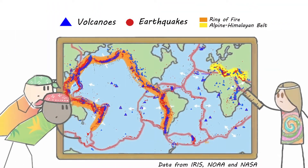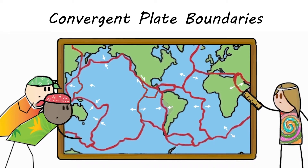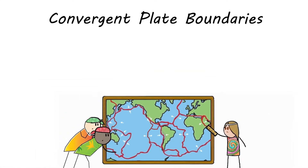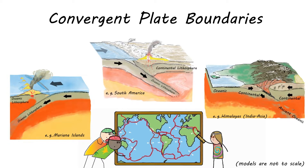In this episode, we're going to focus on convergent plate boundaries. A convergent plate boundary is the meeting place of two plates converging, which just means moving towards each other. Where they meet, one of the plates will sink or subduct beneath the other.